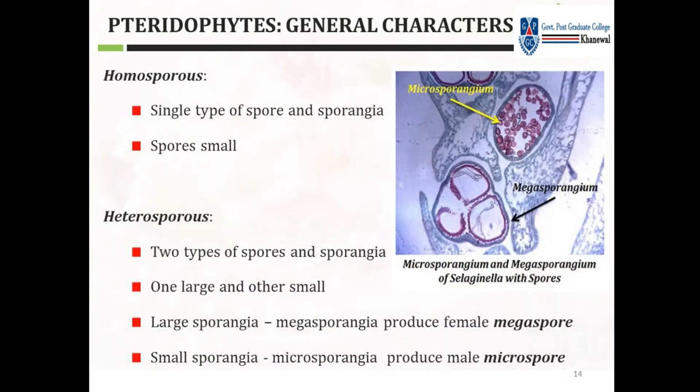In heterosporous species there are two types of spores and sporangia: one large and one small. Large sporangia — megasporangia — produce the female megaspore. Small sporangia — microsporangia — produce the male microspore, as you can also see in the diagram.